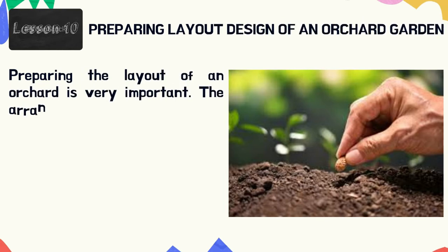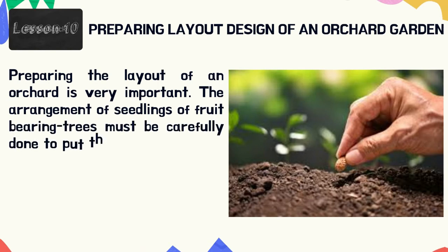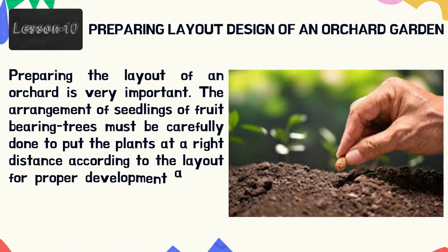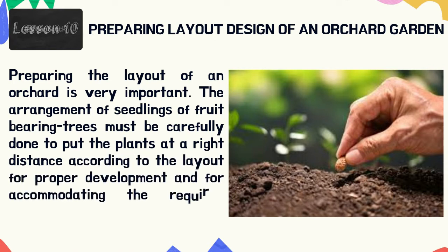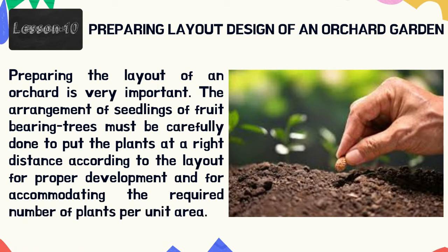So let's proceed with our topic: preparing the layout design of an orchard garden. Preparing the layout of an orchard is very important. The arrangement of seedlings of fruit-bearing trees must be carefully done to put the plants at the right distance according to the layout for proper development and for accommodating the required number of plants per unit area. The proper orchard layout has the following privileges.